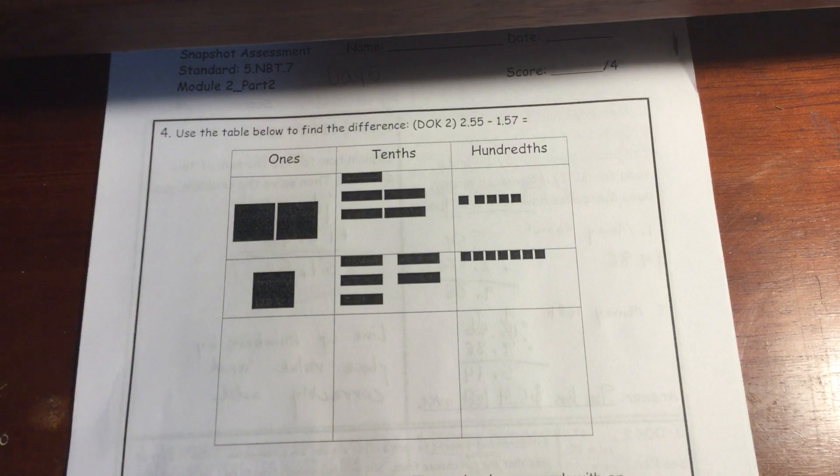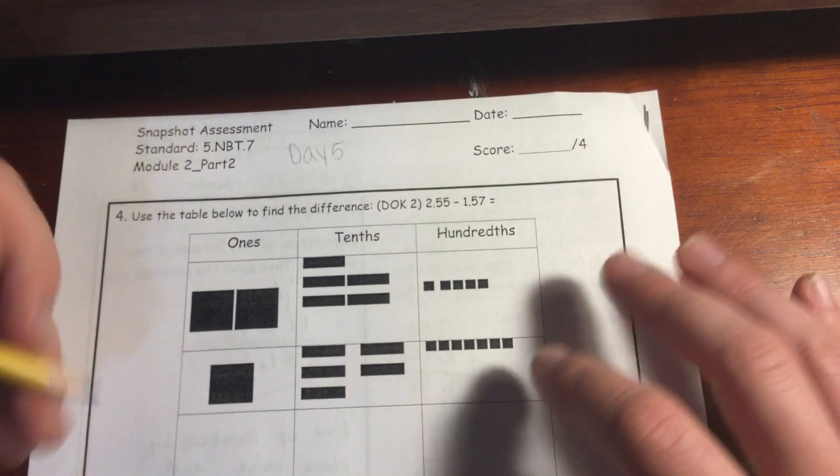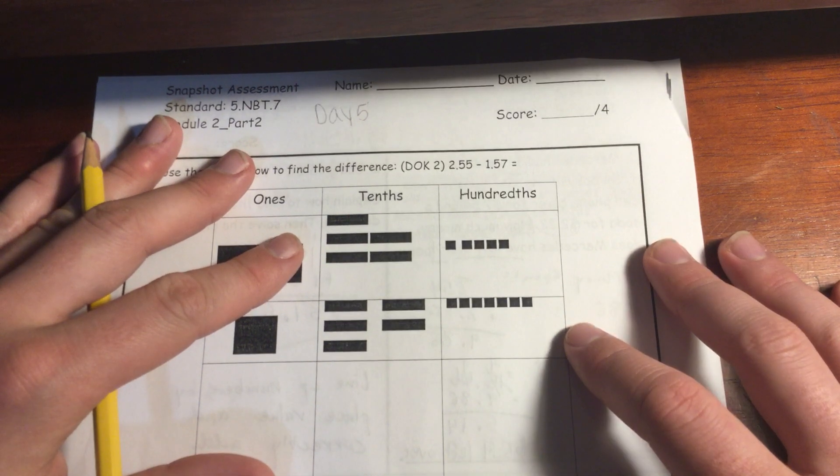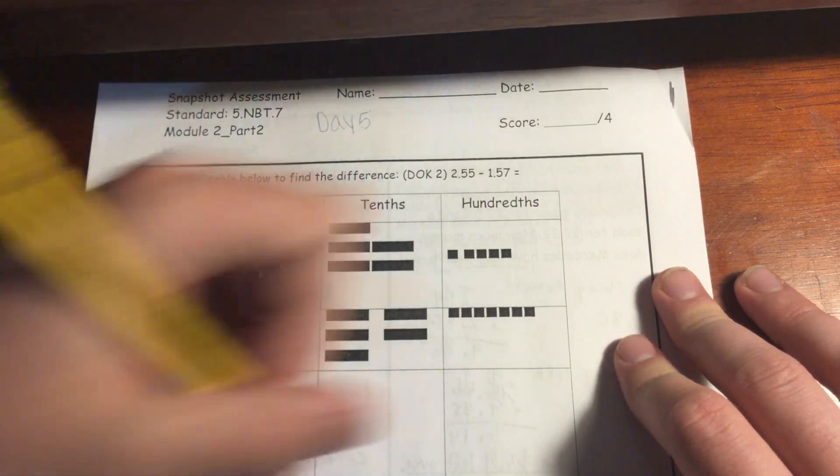So use the table below to find the difference of 2 and 55 hundredths minus 1 and 57 hundredths. This essentially right here is just a place value chart that we're going to use to answer our subtraction question, our difference question.